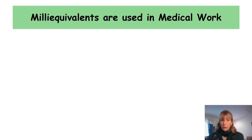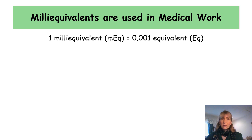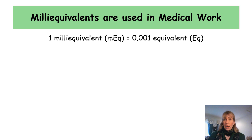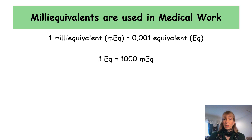In medical work, milliequivalents are used. The prefix 'milli' changes the size of the unit: one milliequivalent equals 0.001 equivalents. The equivalent is the larger unit; the milliequivalent is the smaller unit. Most usefully: one equivalent equals 1,000 milliequivalents — very similar to one liter equaling 1,000 milliliters.